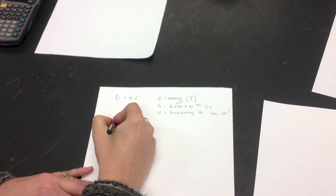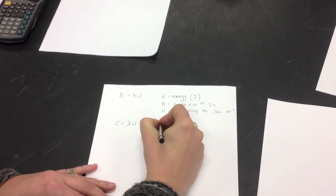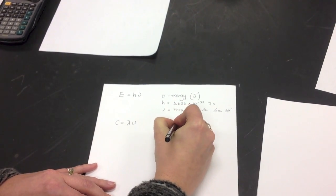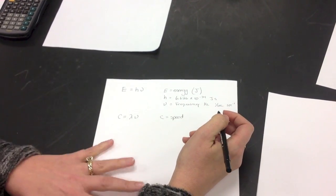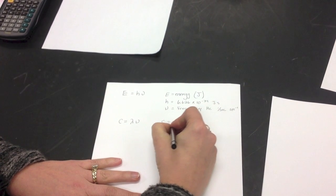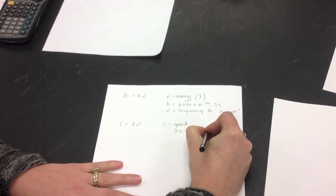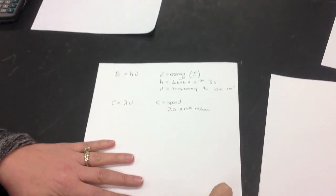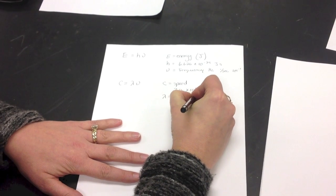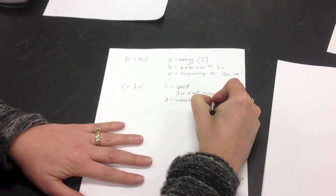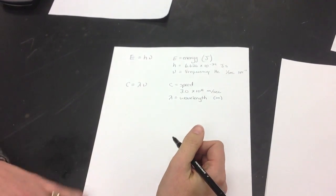The other equation that you need to know is C equals lambda nu. Now C stands for speed. Now this could be speed of whatever, but usually since we're talking about frequency of light, we're looking at the speed of light, and the speed of light is 3.0 times 10 to the 8 meters per second. Lambda is wavelength, and wavelength has units of meters. So that's basically what you need to know to solve these equations.